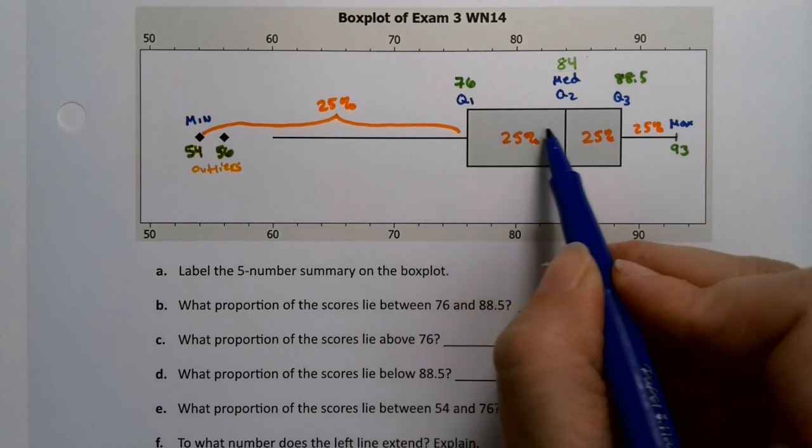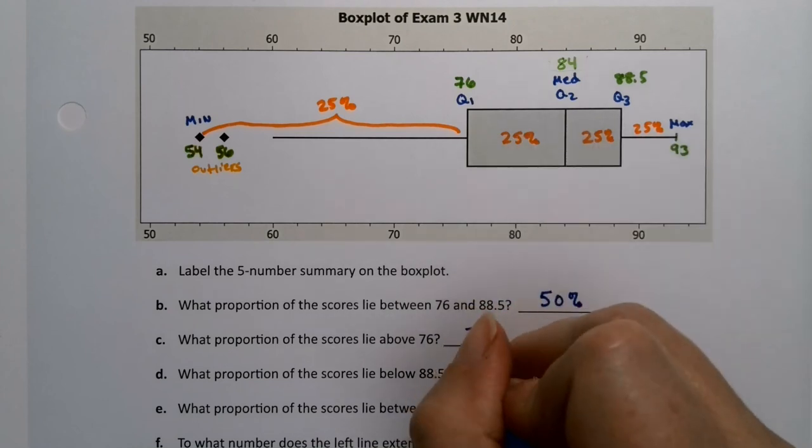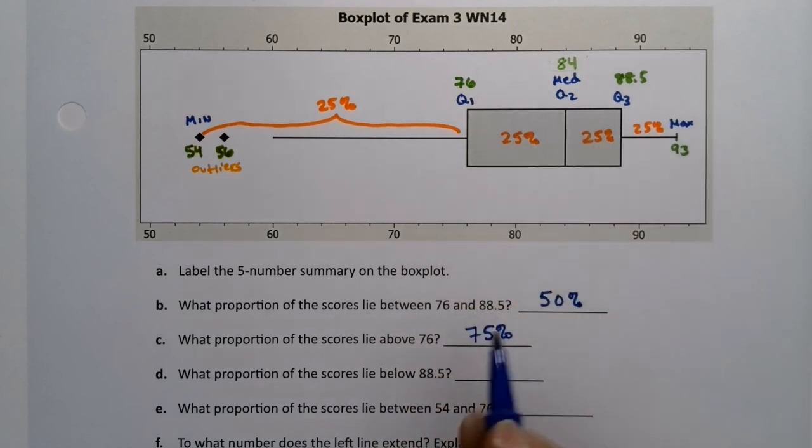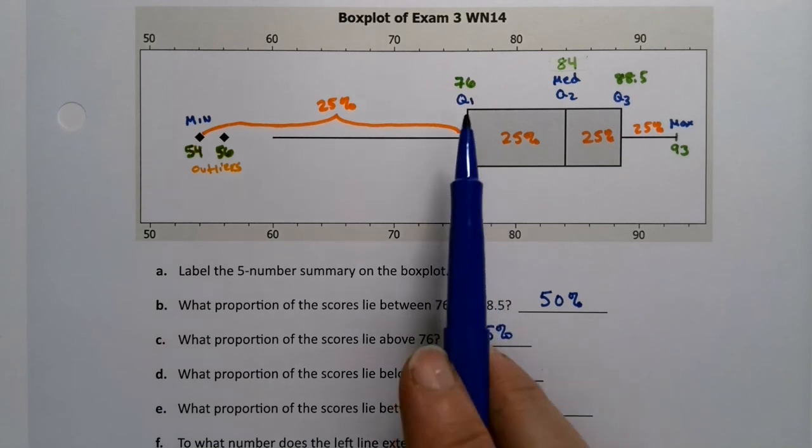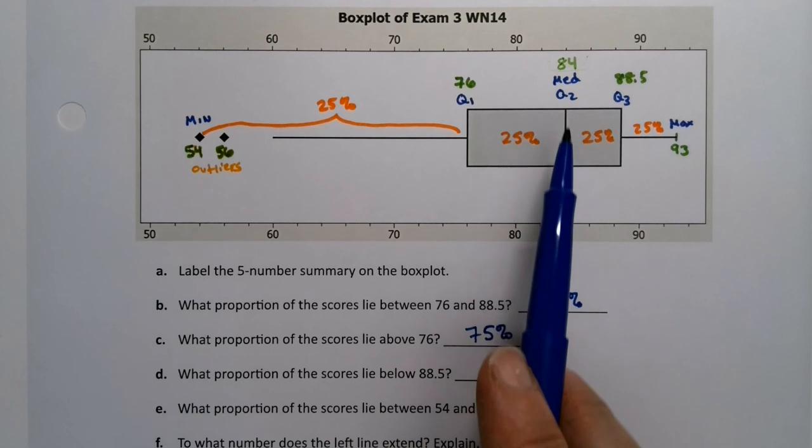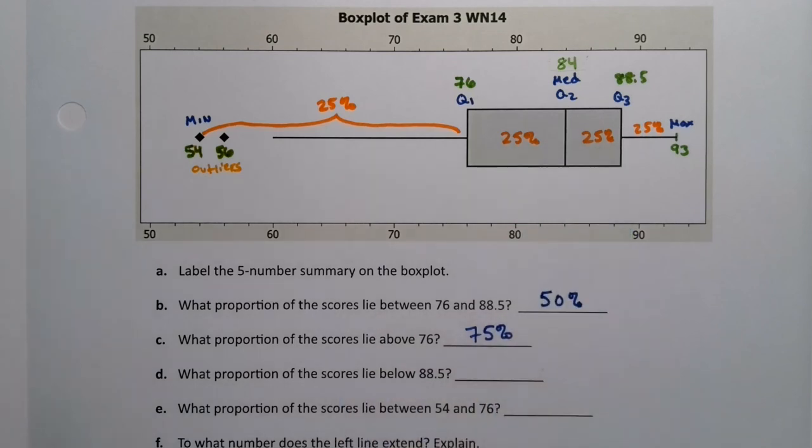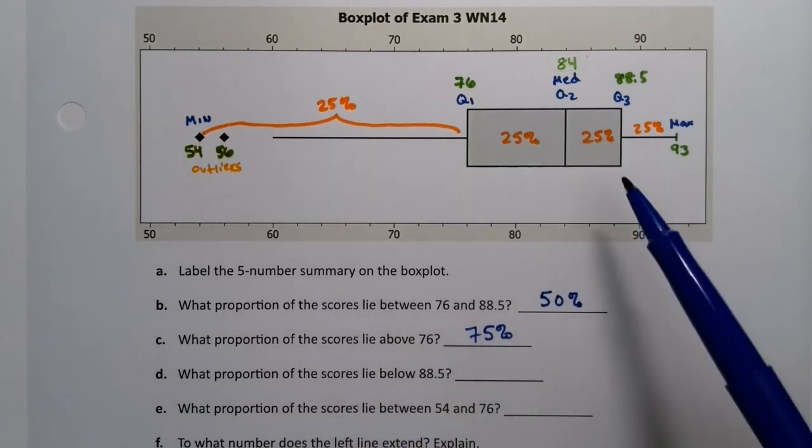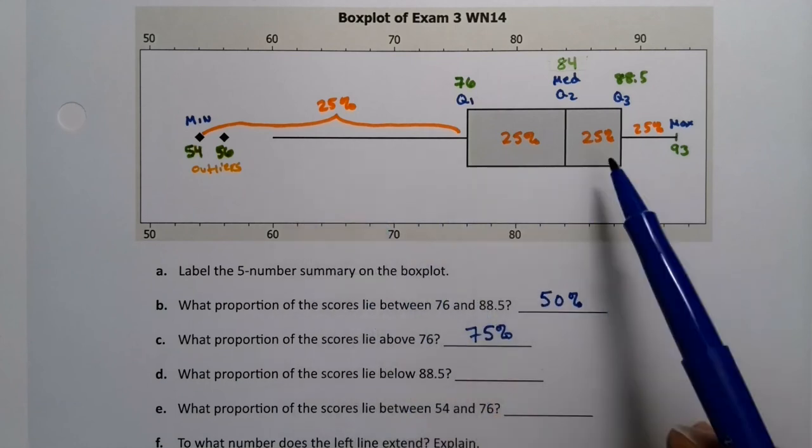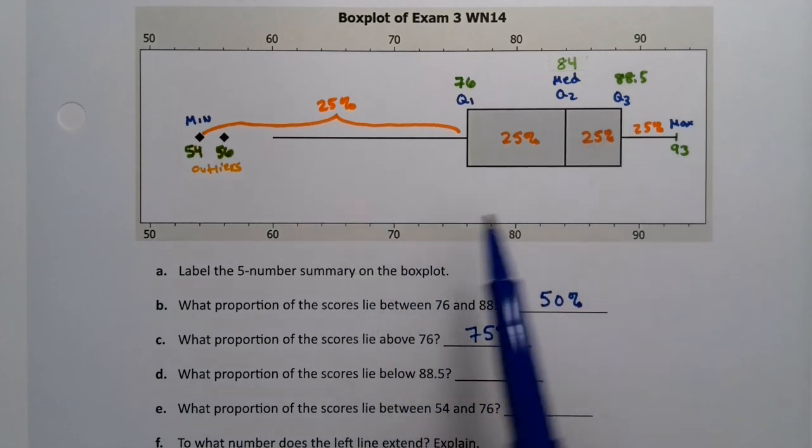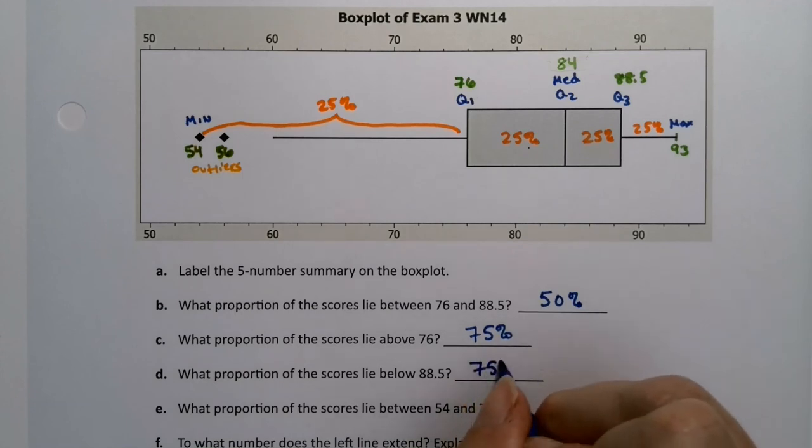Now we're lucky in this example because we actually know these values. In another example, you might have to kind of eyeball them and just roughly estimate—that's okay. All right, what about the percentage below 88.5? Well, that would also be 75%, because 25% + 25% + 25% makes 75%.